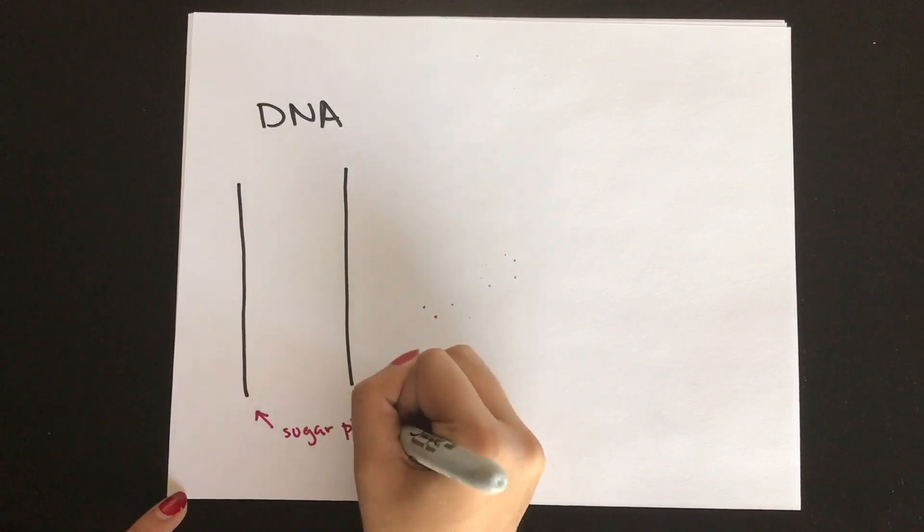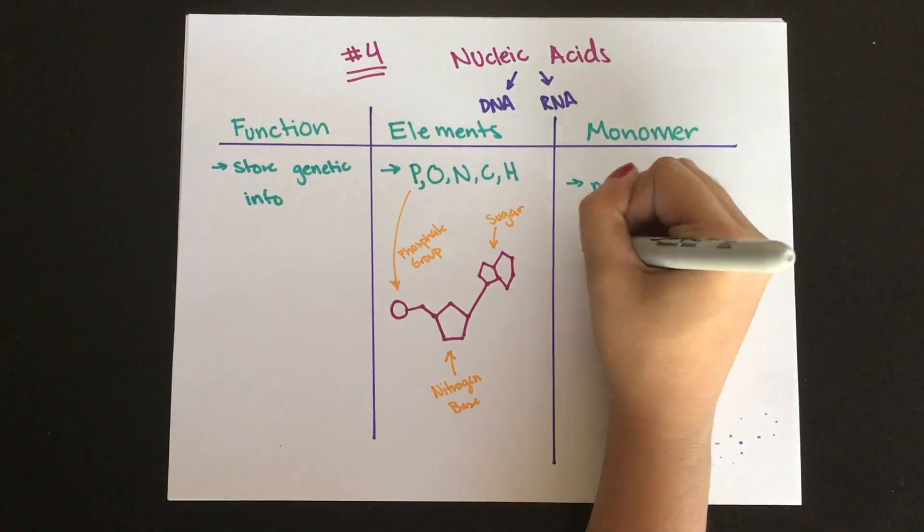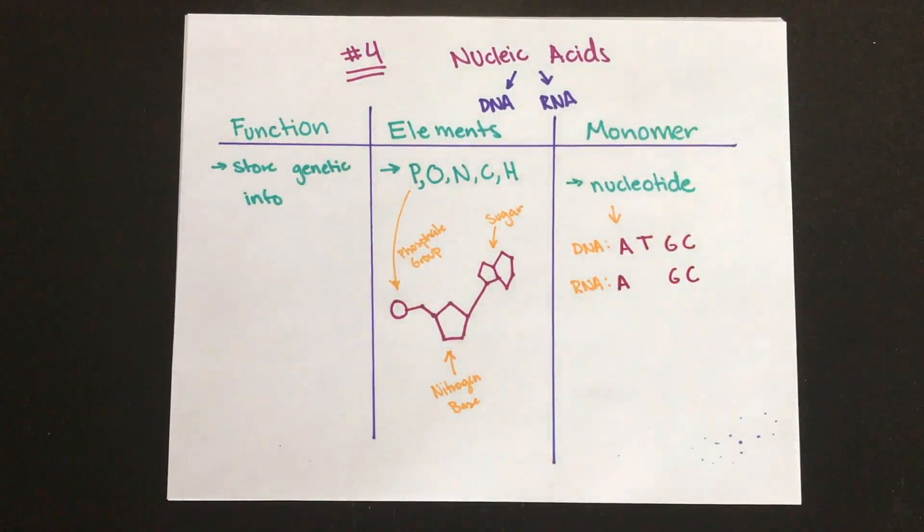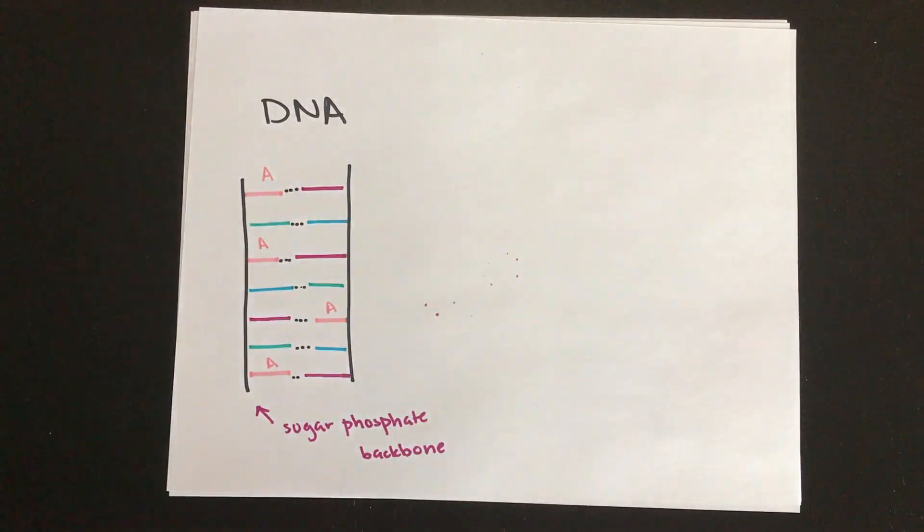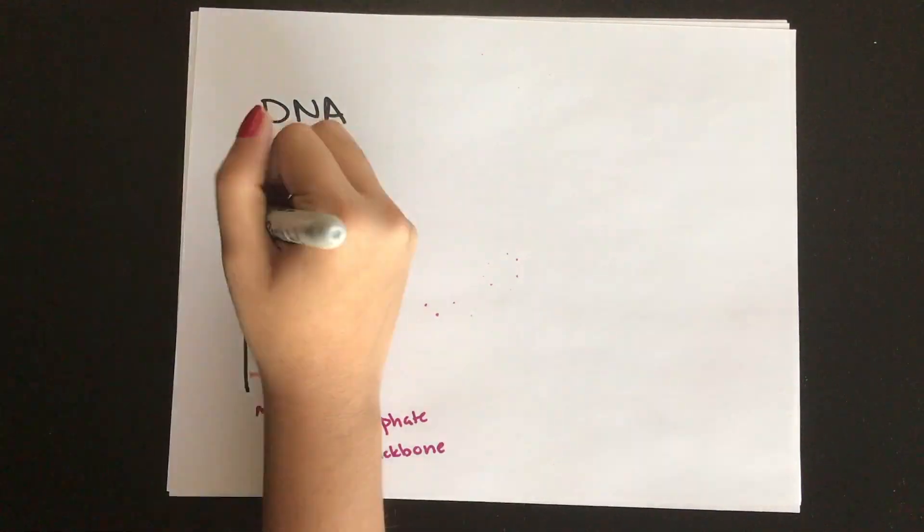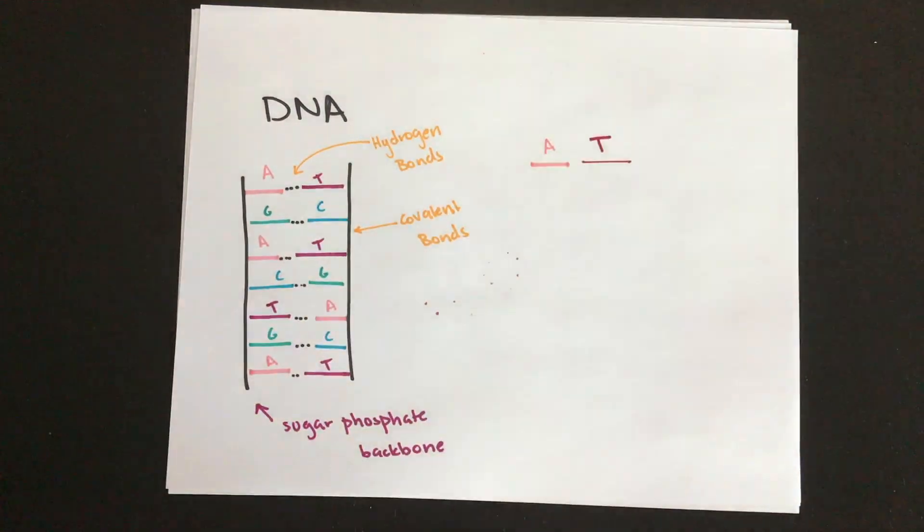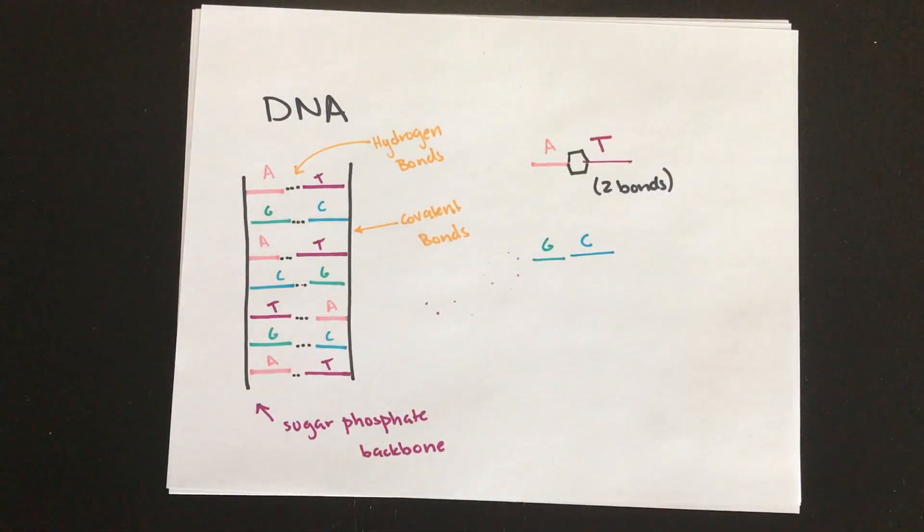Now the sugar that we're going to talk about is deoxyribose for DNA and ribose for RNA. The sugar and phosphate together form the backbone. The four nucleotides found in DNA are adenine, guanine, cytosine, and thymine. And in RNA, it's adenine, guanine, cytosine, and uracil instead of thymine. Remember that adenine and thymine will only bond with each other, and the same goes for cytosine and guanine. When adenine and thymine bind together, they form two hydrogen bonds, whereas with cytosine and guanine, they form three hydrogen bonds, making it a stronger bond.